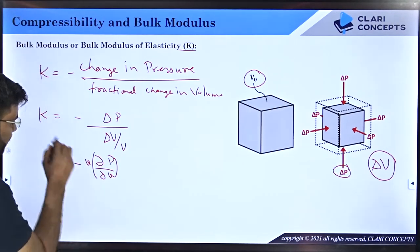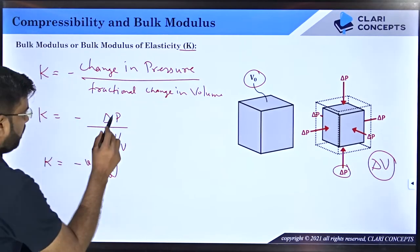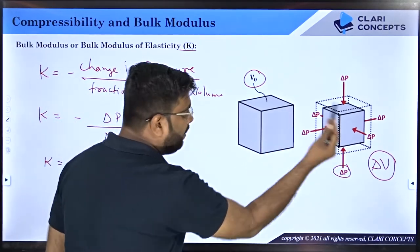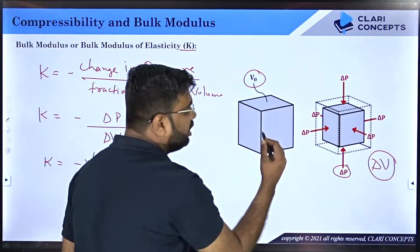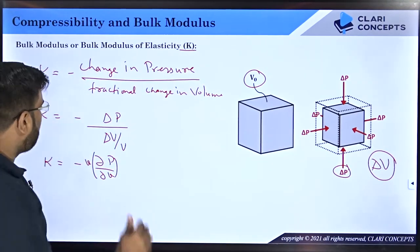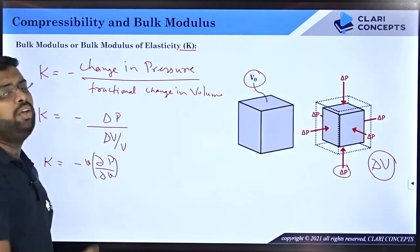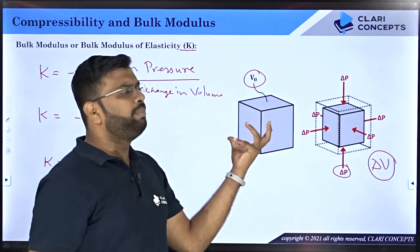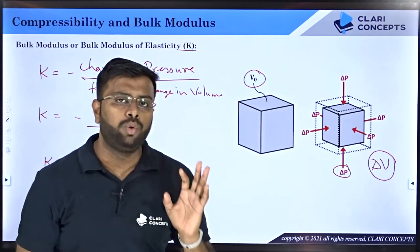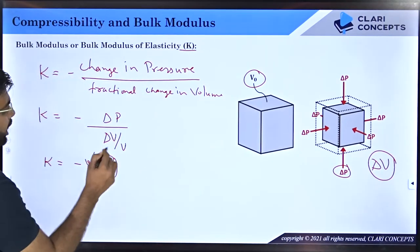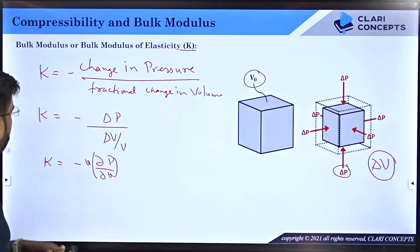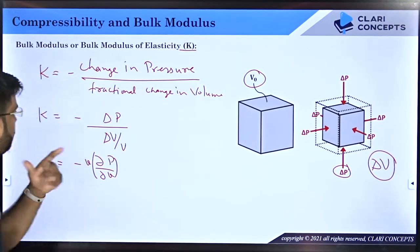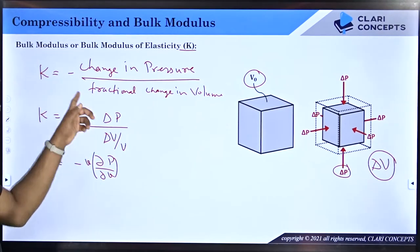Why the negative sign? When you calculate delta P, that is P2 minus P1 — P2 is higher, P1 is smaller — so delta P is positive. But delta V, which is V2 minus V1 where V2 is the smaller volume and V1 is the bigger volume, gives a negative value. To compensate for this negative value and ensure the property does not have a negative sign, we put a negative, so the overall value becomes positive.